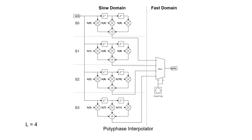Because each phase is active only once for every L output samples, it is possible to implement the sub-filter as an FIR filter that operates at the original sampling rate of the signal. The output of each phase is connected to a multiplexer synchronous to the output sampling rate, which in this case runs four times the initial sampling rate. This process is equivalent to the upsampling stage in the direct interpolation previously discussed.